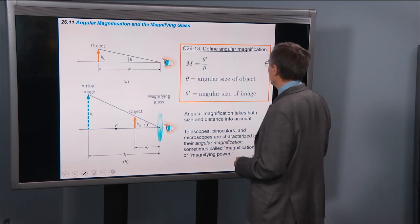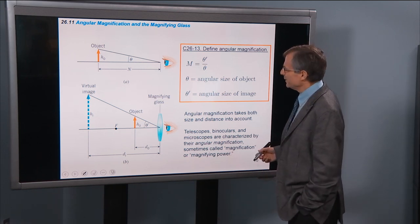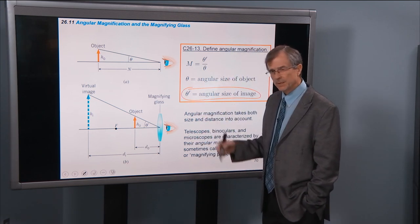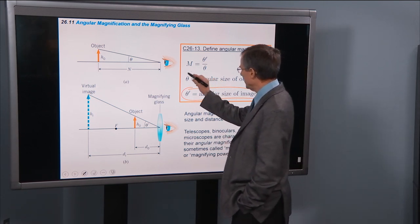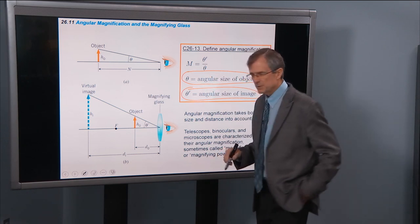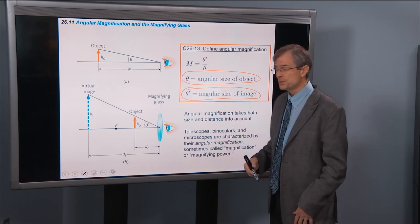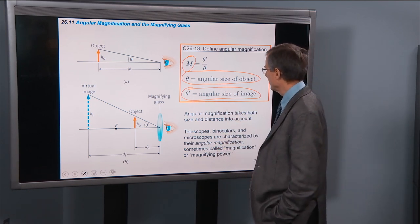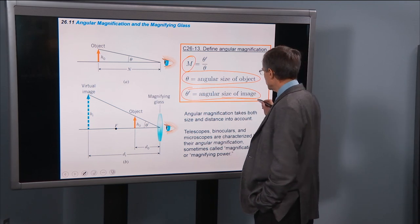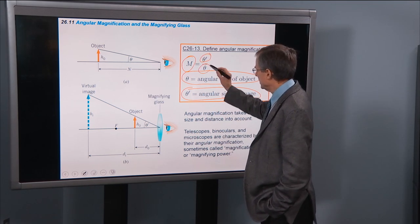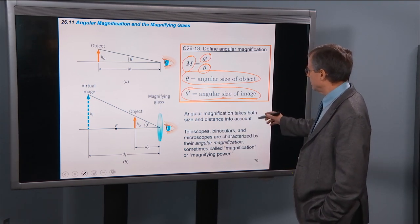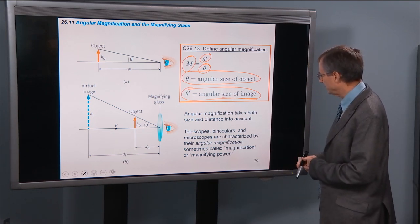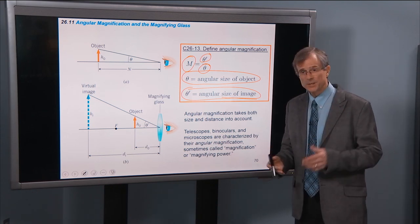Define angular magnification. So again, angular magnification is the ratio of the angular size of an image using some optical system. So theta prime is this angular size of an image divided by the angular size of the object. So we're going to use a telescope to try and get an angular magnification M. And this is what telescopes, when you talk about a 100 times telescope, they're talking about angular magnification. It's a ratio of those two. So you want the size of the image, angular size, to be bigger than the size of the object, so it's really magnified. So angular magnification takes both size and distance into account. Telescopes, monoculars, microscopes are characterized by the angular magnification, sometimes called just magnification or magnifying power.